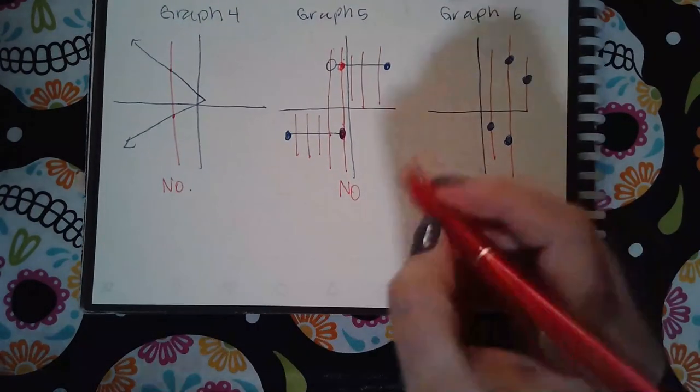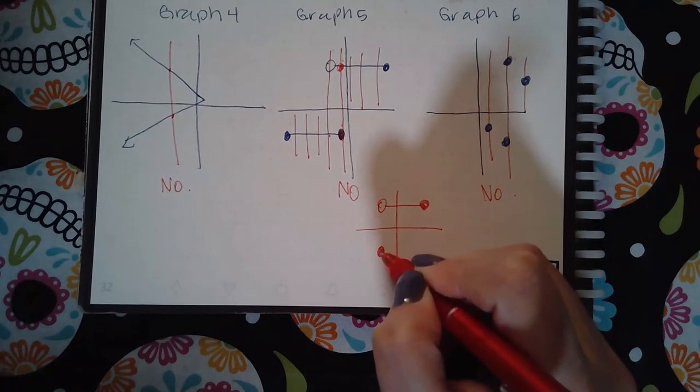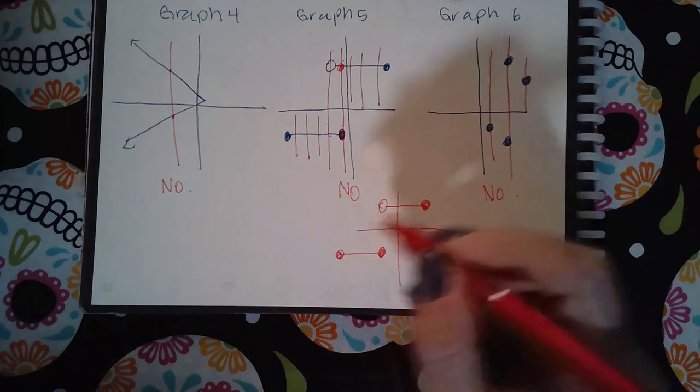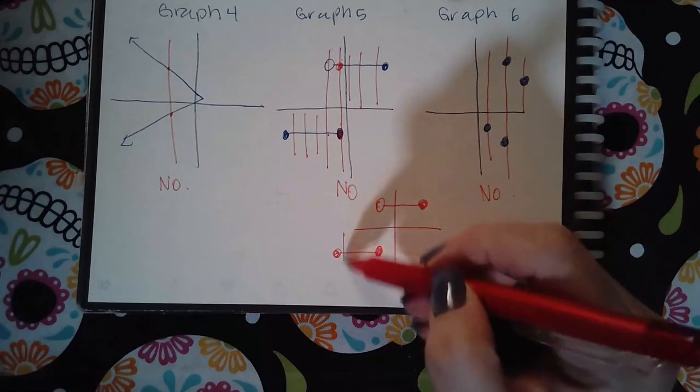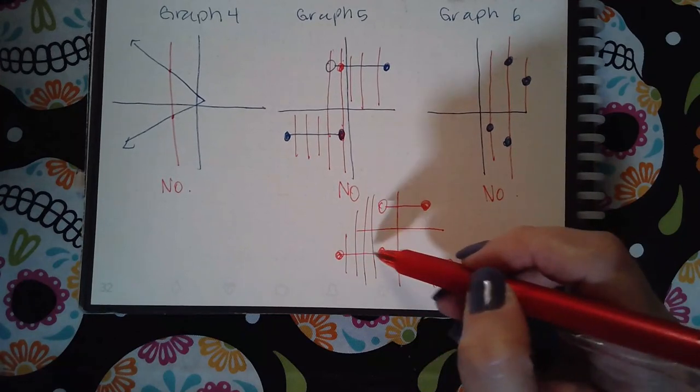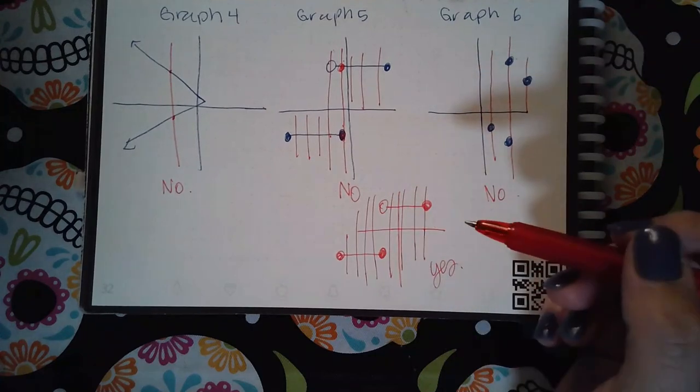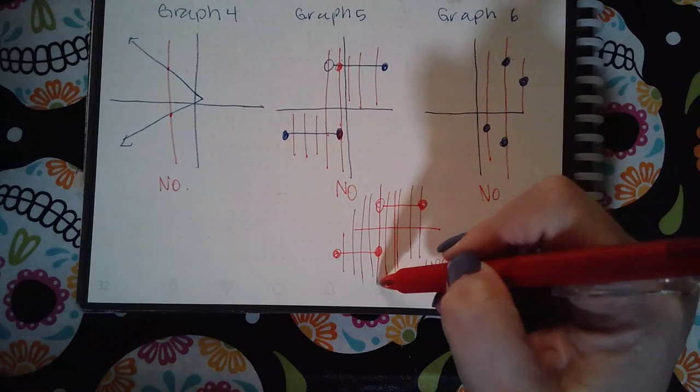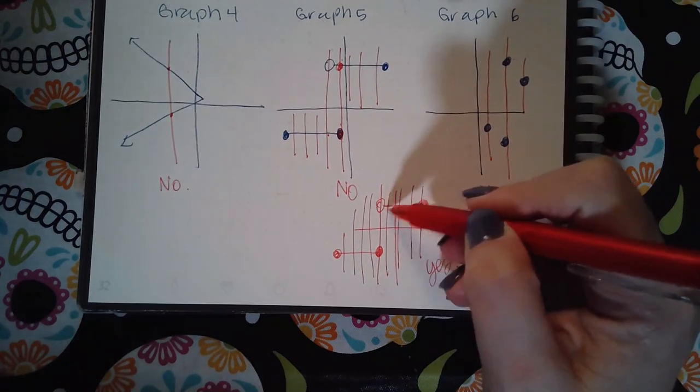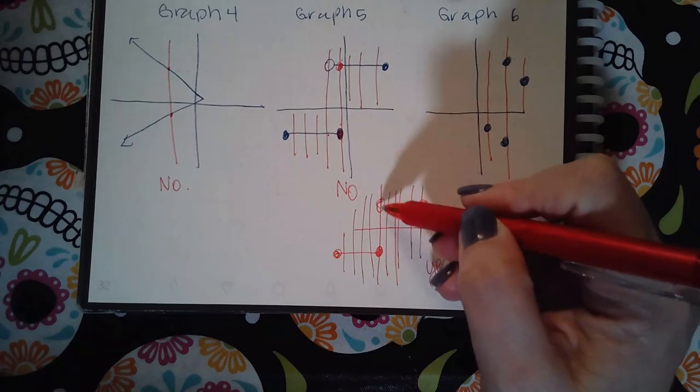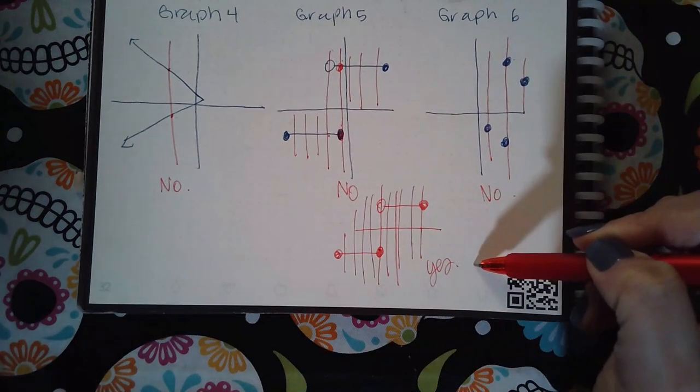I do want to make you aware though, if the graph were like this, then this would be a function. This would be a yes. And the reason is because all my vertical lines only touch this piece once each time. All the vertical lines on this side only touch the graph once each there. But if I draw one right in the middle, it appears to touch both segments. But again, there's a hole there. So there's nothing there. So this vertical line is really only touching once and it's right there, which makes this one yes, it is a function.